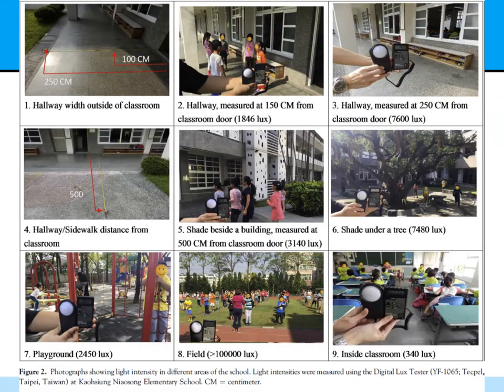This slide shows examples of light intensity measurements across a number of different situations. Notice that 1,000 lux is really available anywhere except inside the classroom. Consider the interesting juxtaposition: sunlight being over 100,000 lux on the field at roughly midday, versus inside the classroom having only 340 lux — orders of magnitude greater light intensity. So even with the window open to sunlight, just one row away from the window makes a big difference in terms of light intensity that the eye is actually receiving.